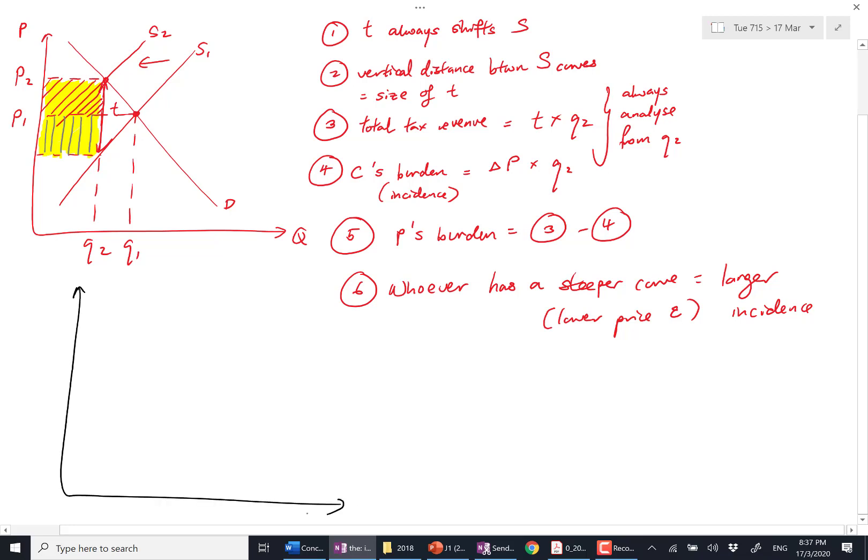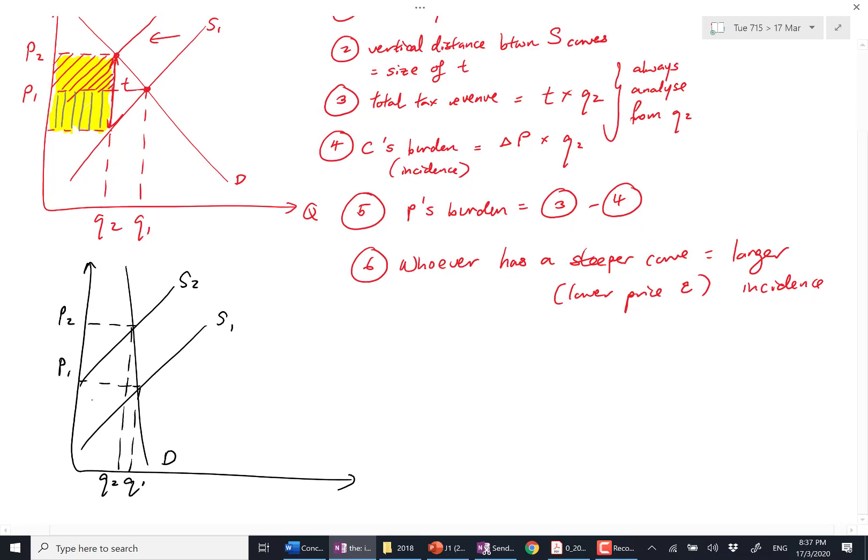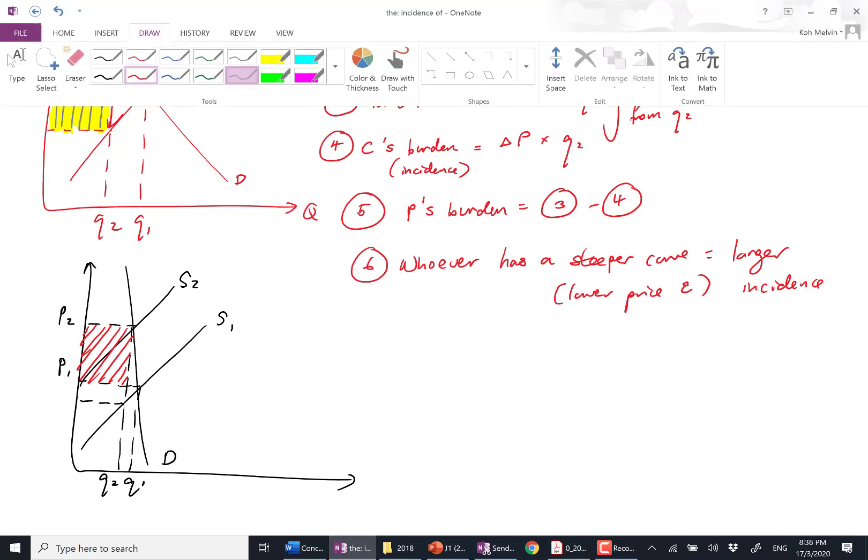Like in this case, if I have a really steep demand curve and I do the same thing - S1, S2, P2, P1, Q2, Q1 - my consumer's share will become bigger, whereas my producer's share will become smaller.